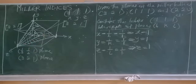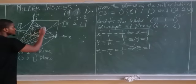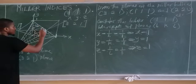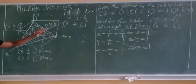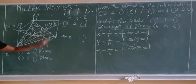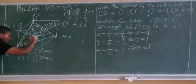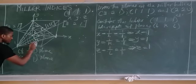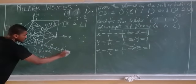Join these three points together to form the (111) plane — a triangular plane cutting all three axes at 1. Shade it to show the plane clearly. For the direction, draw a line from the origin at 90 degrees to this plane. Enclose it in square brackets: [111] direction.